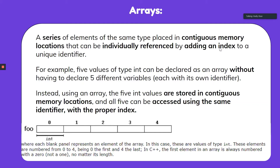Arrays are basically a series of elements of the same type placed in a contiguous manner — which is really fancy for being placed right next to one another — and they can be individually referenced by adding an index to the unique identifier. Let's look at it through an example.